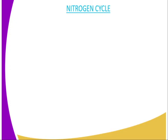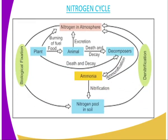The nitrogen cycle is the process through which nitrogen is removed from the atmosphere, and also the processes involved in returning nitrogen into the atmosphere. I have a chart here that explains the various methods through which nitrogen is removed from the atmosphere.